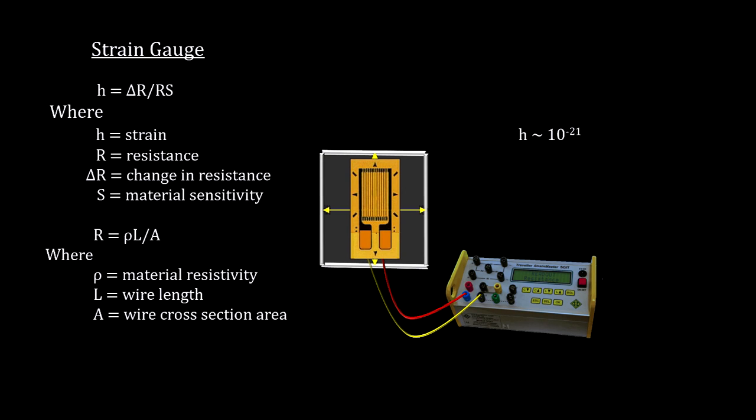Unfortunately, this technique is literally millions of times too insensitive to measure the tiny gravitational wave amplitudes, H. But this technique is why we call H a measure of strain.